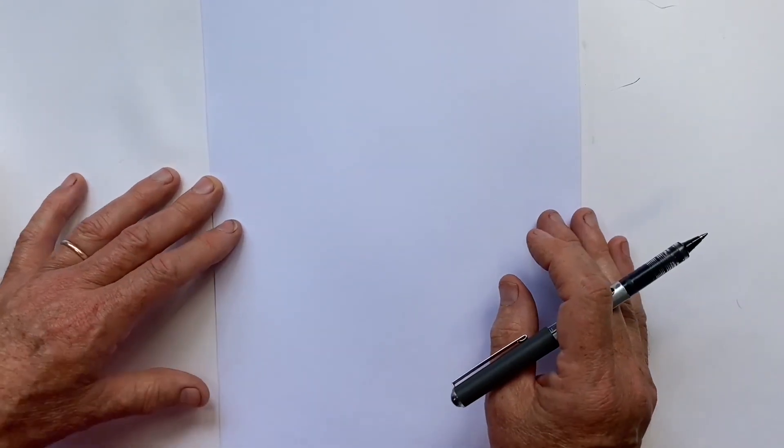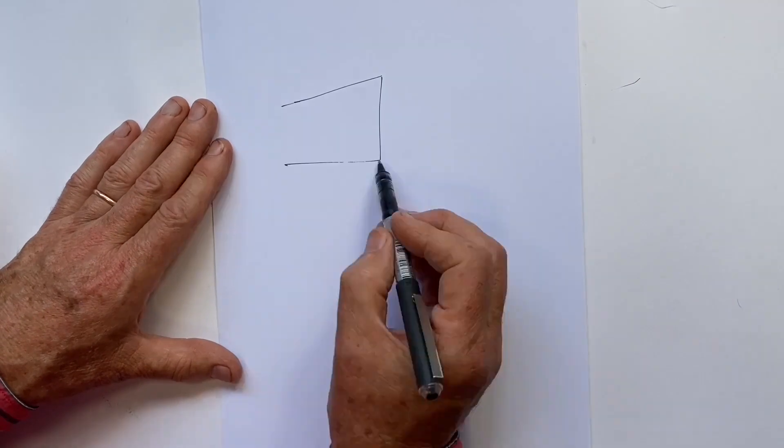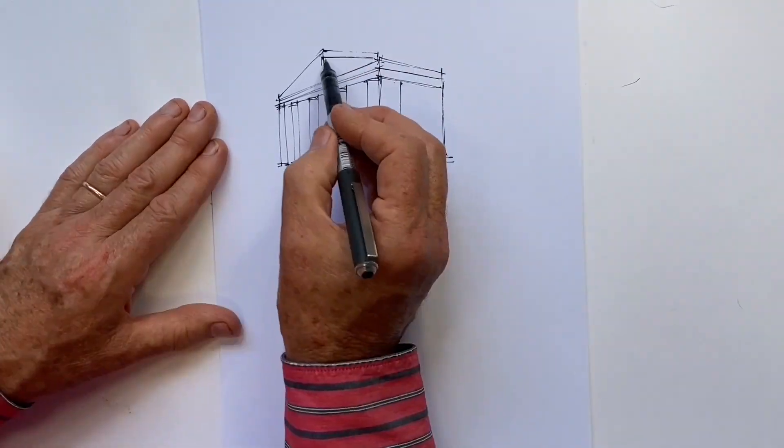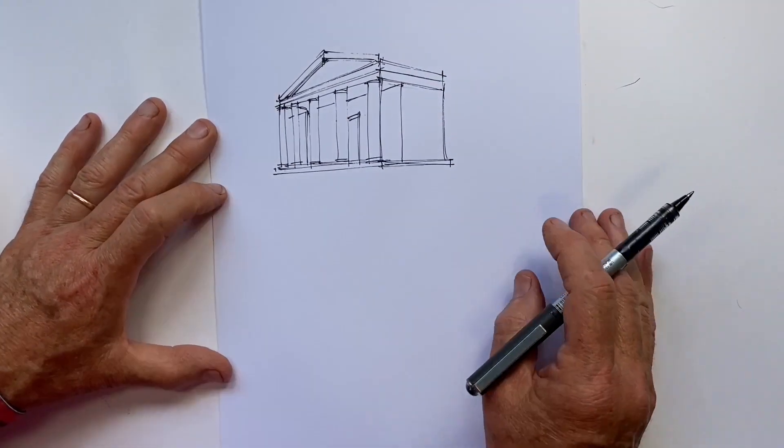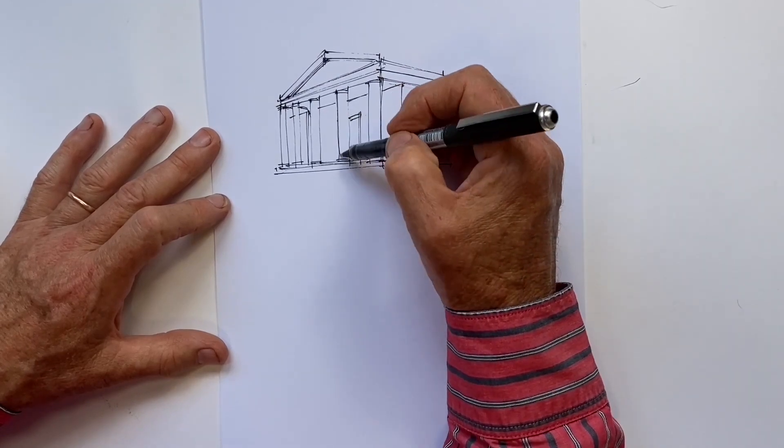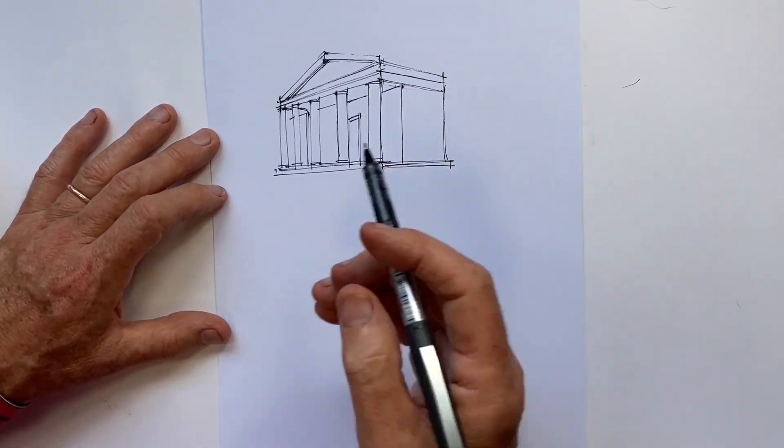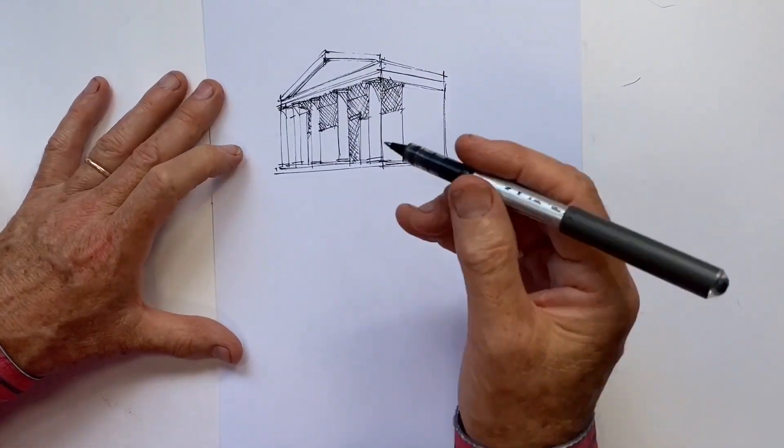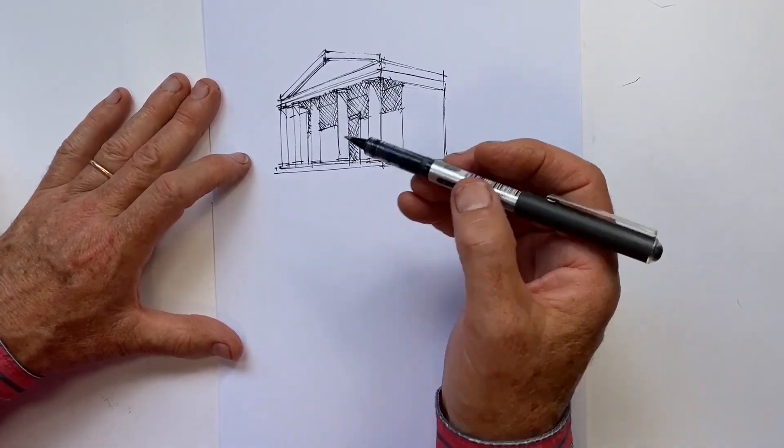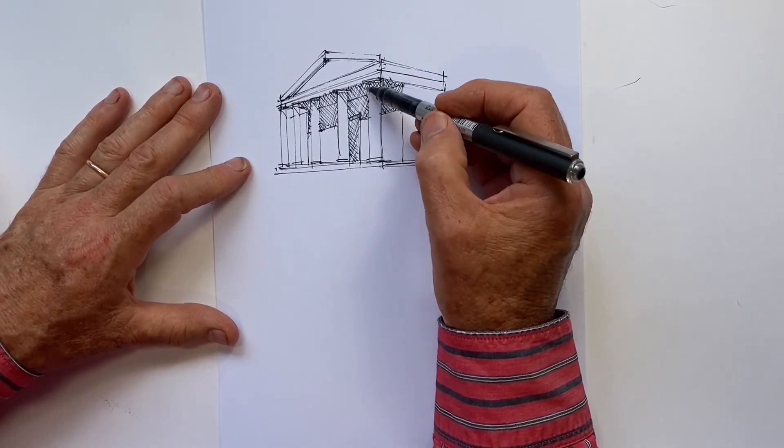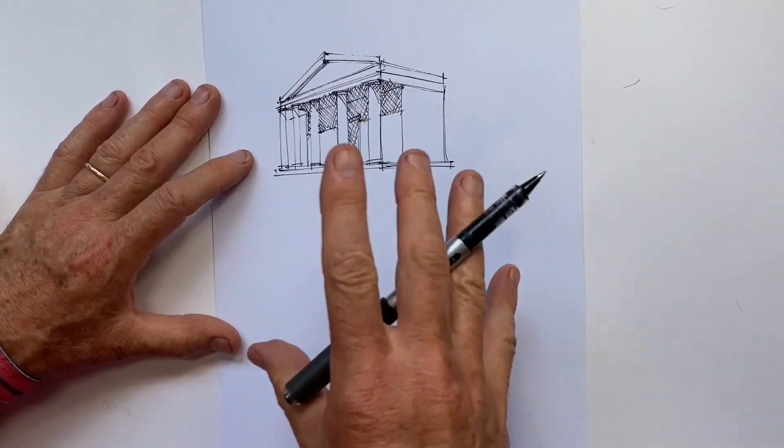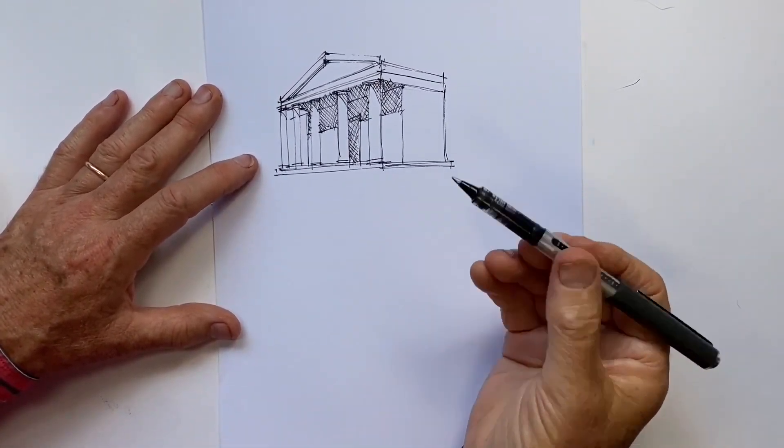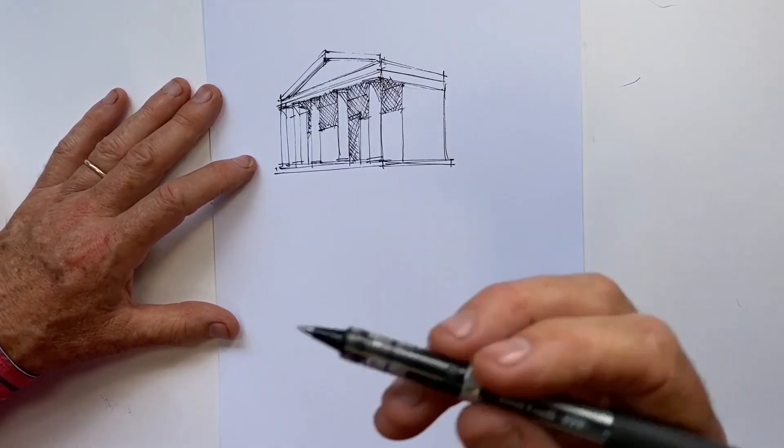For our fourth common mistake, we need a simple drawing. And this will do. And this mistake is where we want to use hatching to indicate shade and shadow. And what happens is the hatching or cross-hatching is laid over the top of our drawing without any regard for the shape or the direction of the structures that are under the hatching.